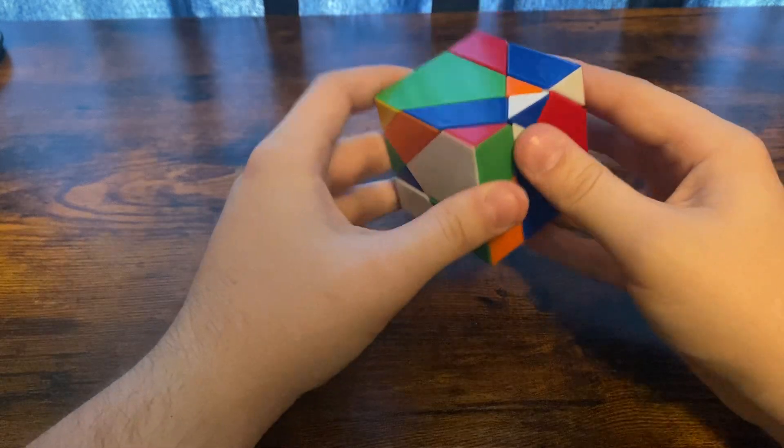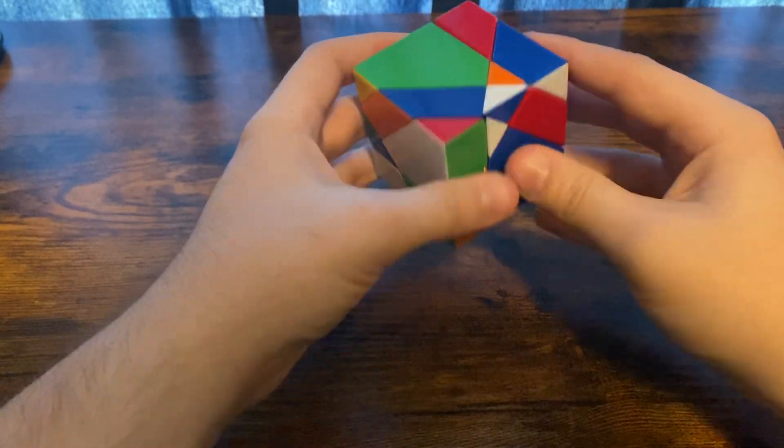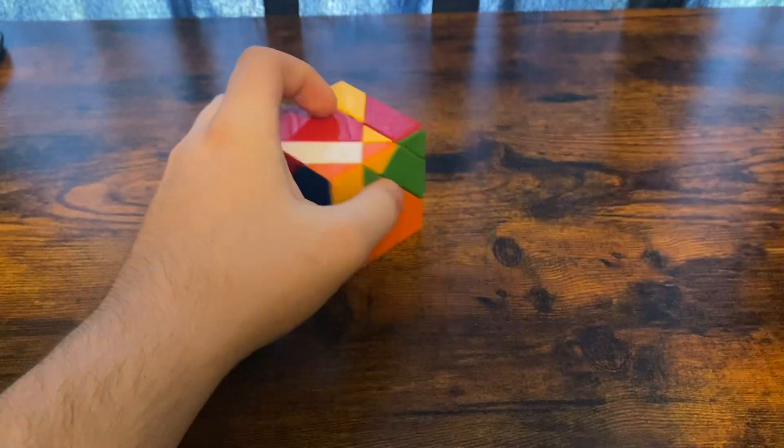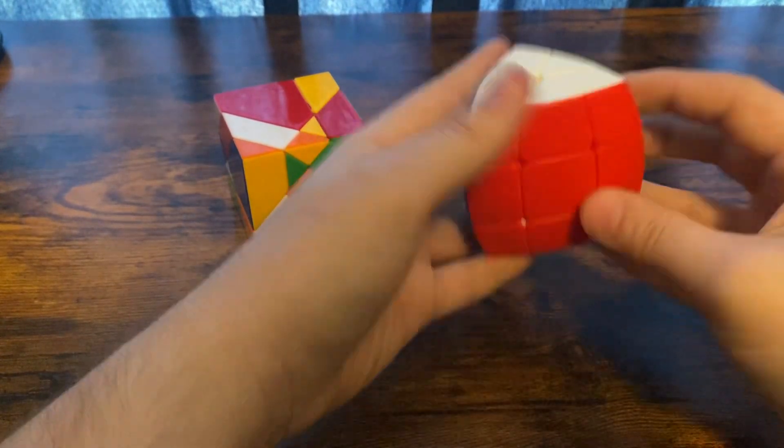We're going to solve these pieces around the equator, and we're going to do that by just using these three edge turns. It's going to be like solving the middle layer on this puzzle.